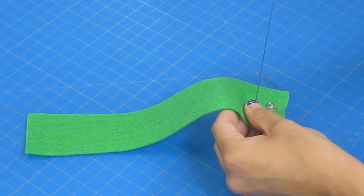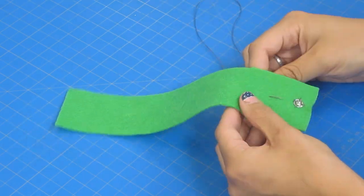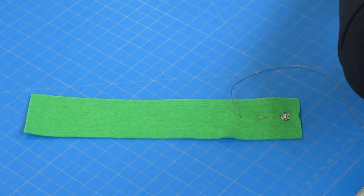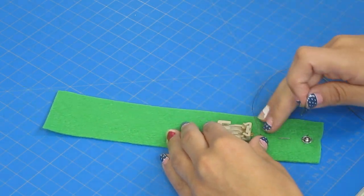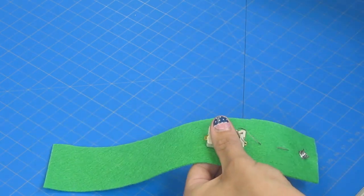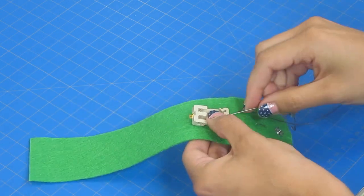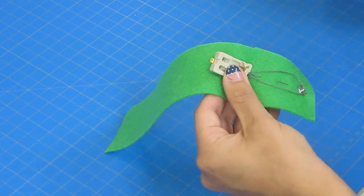Once you finish securing the outie snap you will then sew towards the negative end of the battery holder. You will loop three times around that hole and cut the thread off.